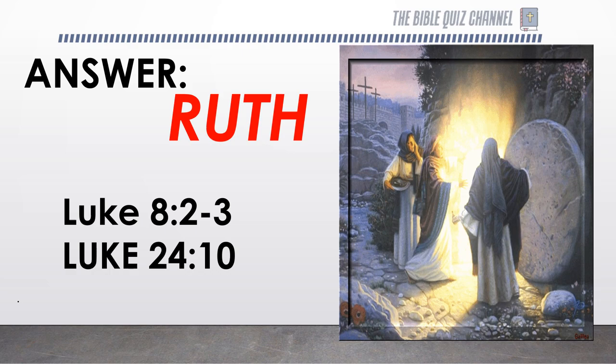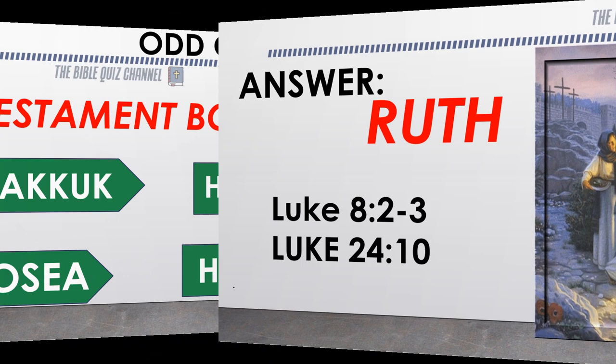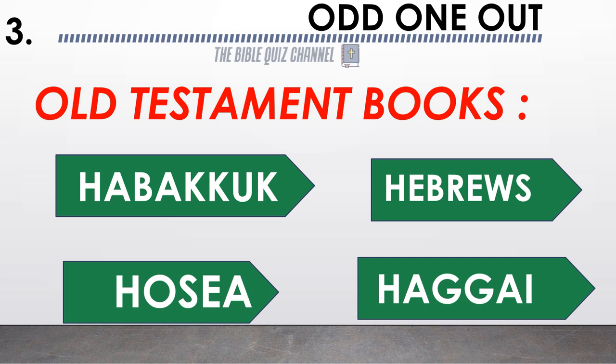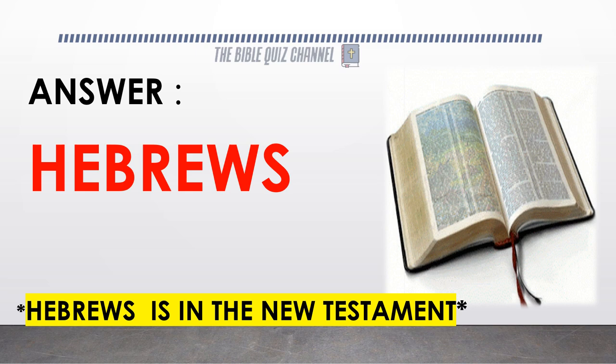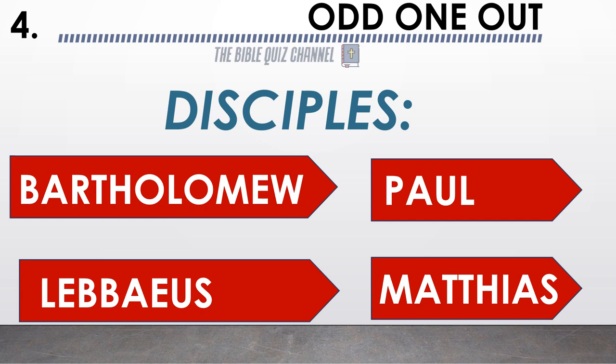Old Testament books — Habakkuk, Hebrews, Hosea, Haggai. The correct answer is Hebrews. Hebrews is in the New Testament. Disciples — guess the odd one out: Bartholomew, Paul, Thaddaeus, or Matthias?